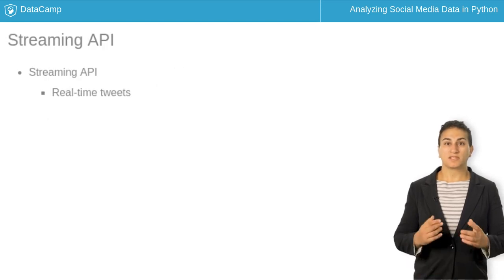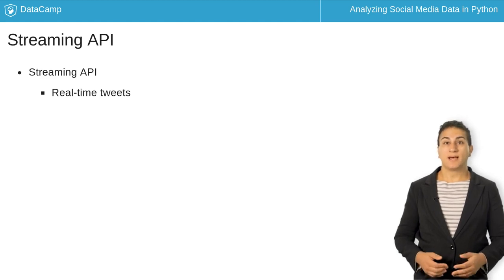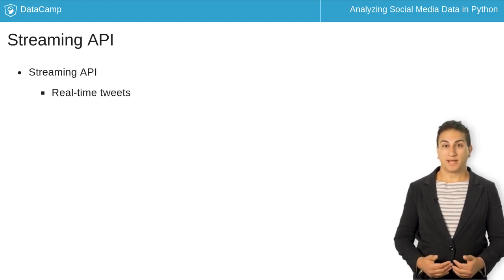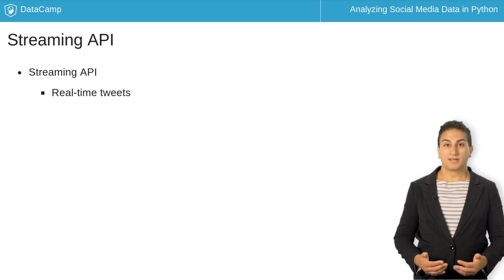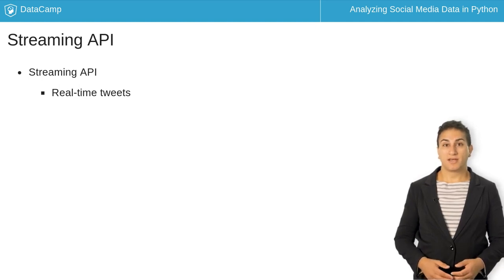The Streaming API allows us to collect a sample of tweets in real time based on keywords, user IDs, and locations. The connection stays open until you close it. The Streaming API has two endpoints: filter and sample.